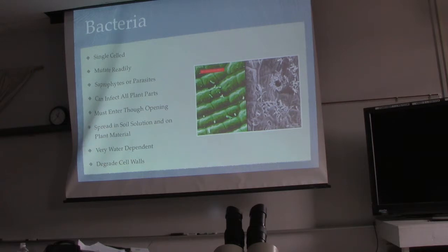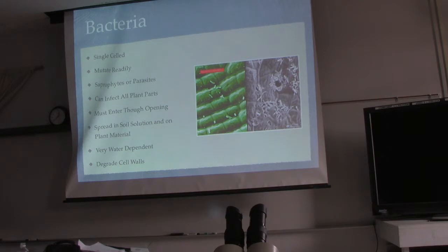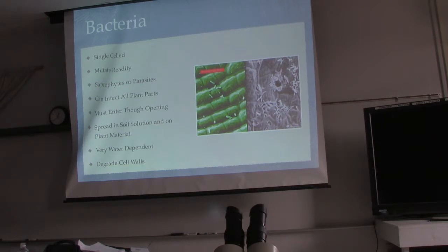Bacteria spread in soil solution or on plant material. Soil solution is the water in the soil, so bacteria is very water dependent. Bacteria can travel wherever water goes, and since every surface has a water layer, it can get almost anywhere. In the soil it's very mobile, using flagella — little tail-like structures — some are corkscrews, some squiggle. They travel through water quickly, and a trillion of them moving in one direction can be very detrimental to your plant.